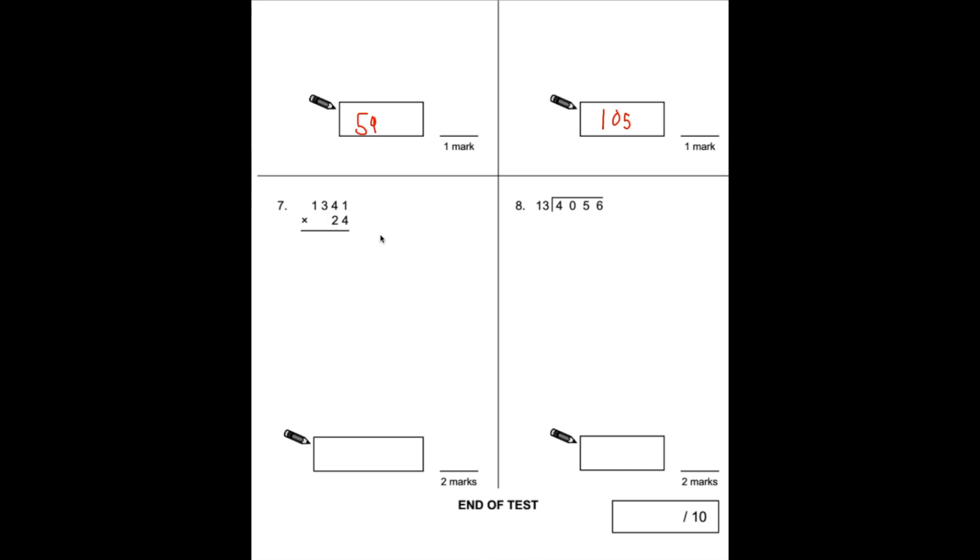Question 7 is testing your knowledge of long multiplication. We start with this number here, the number furthest on the right. 4 times 1 is 4, 4 times 4 is 16, we put the 6, carry the 1. 4 times 3 is 12, plus the 1 is 13, carry the 1. 4 times 1 is 4, plus 1 is 5. So this is 5364, which is 4 times this number here.